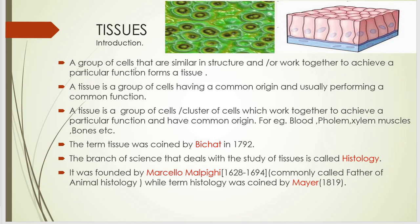In another way, we can say a tissue is a group of cells having a common origin and usually performing a common function. Or in another way, a tissue is a group of cells or cluster of cells which work together to achieve a particular function and have a common origin.